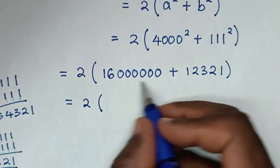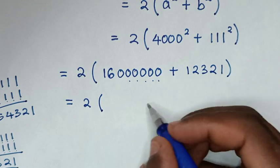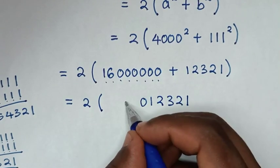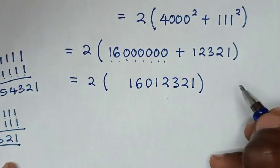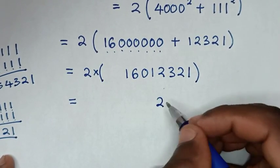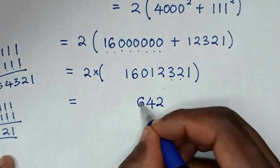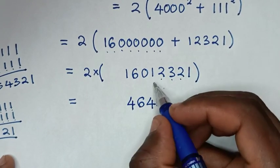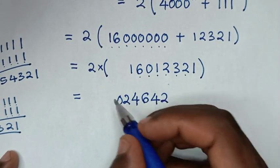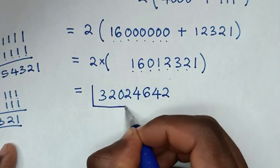Adding inside the bracket: 16,000,000 + 12,321 = 16,012,321. Then multiplying by 2: 2 × 16,012,321 = 32,024,642. Therefore, this is our final answer.